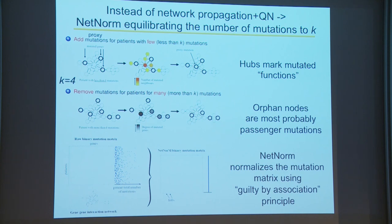Regarding which network is used: in this case it was a mixture combining three levels — metabolic type relations, signaling type, and transcriptional regulation type. It combines many different types of cellular regulation, making it quite a dense network.